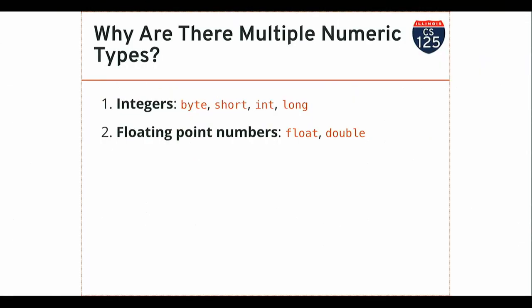There were four different ways to store integers in Java: byte, short, int, and long — differing in terms of the range of integers they can hold. We had two types of floating point numbers for storing numbers with a decimal component, as opposed to just whole numbers. We also had a way of storing characters, which we'll soon build into strings. And finally, there's the Boolean value or truth value, which describes whether something is true or false.